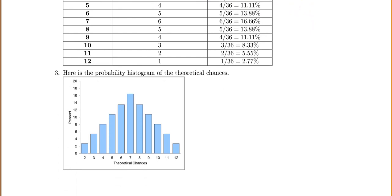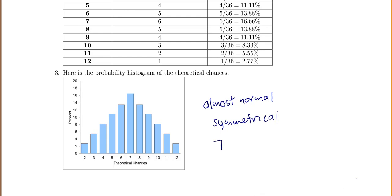Here is our theoretical probability histogram. The chance for a 2 is about 2.77%, a 3 goes up to 5.55%, and so on. When we look at this, it does seem almost normal. It also seems symmetrical. Notice that 7 is the highest bar — 7 is the most likely sum. And 2 and 12 are the least likely.